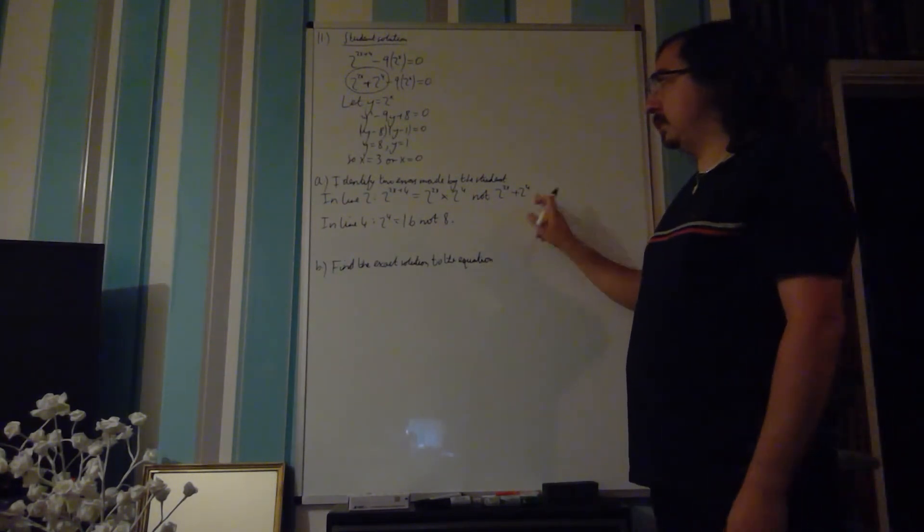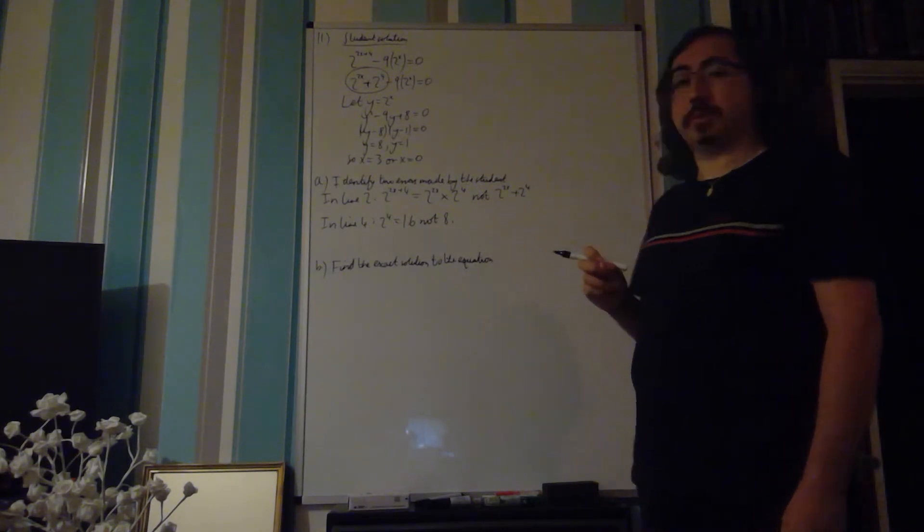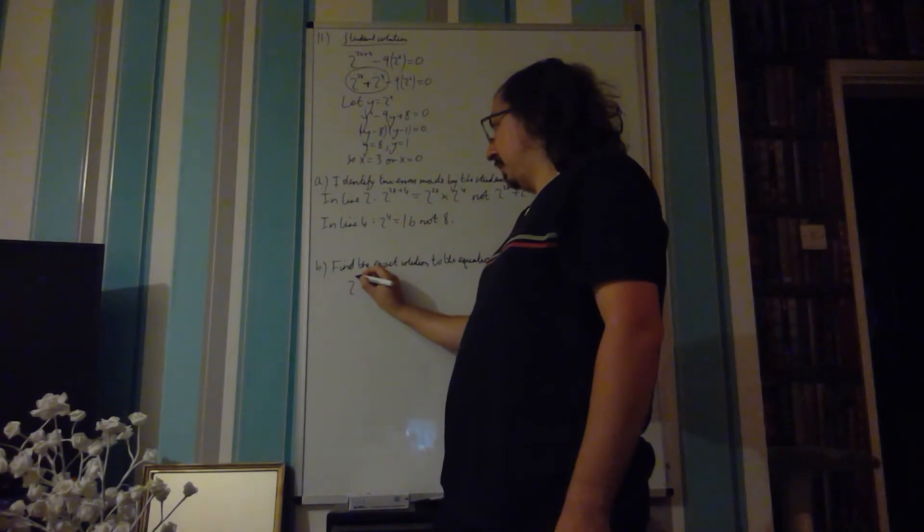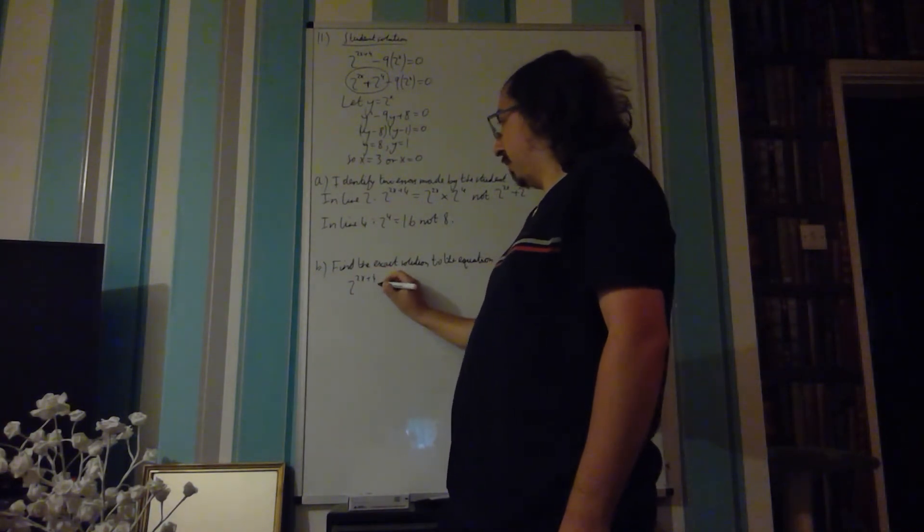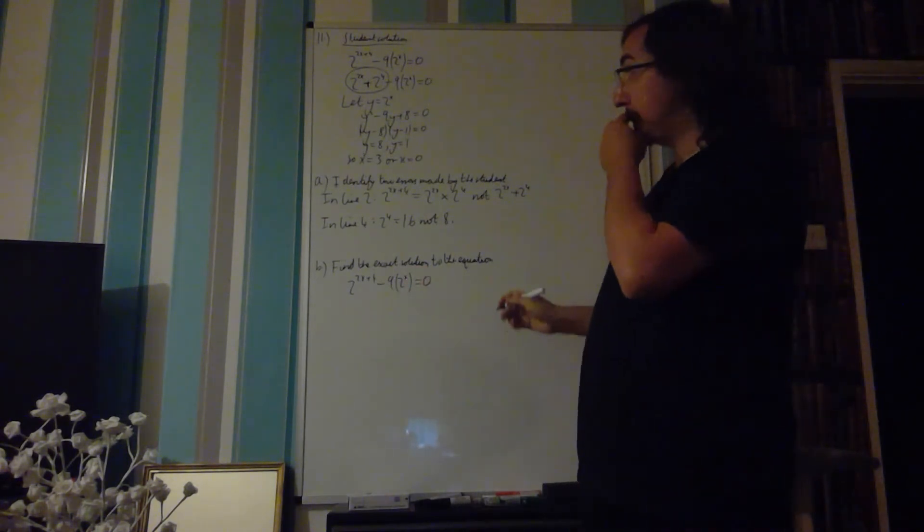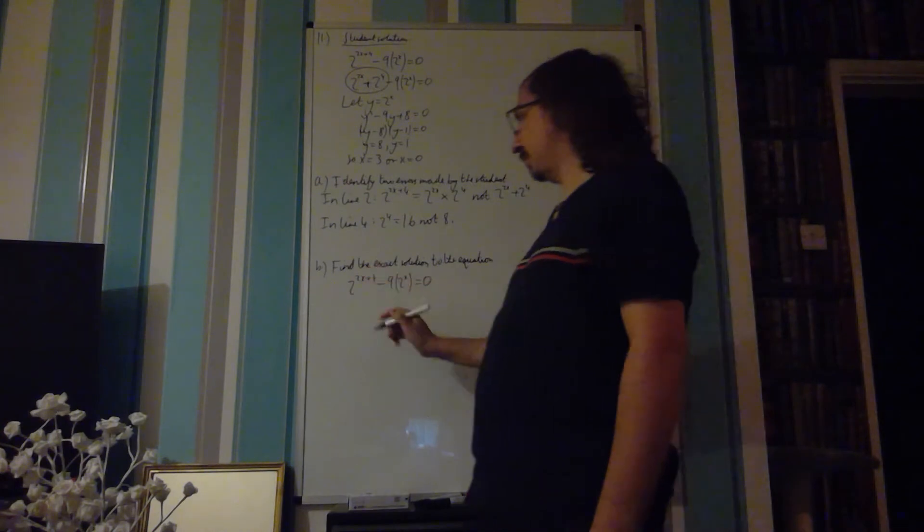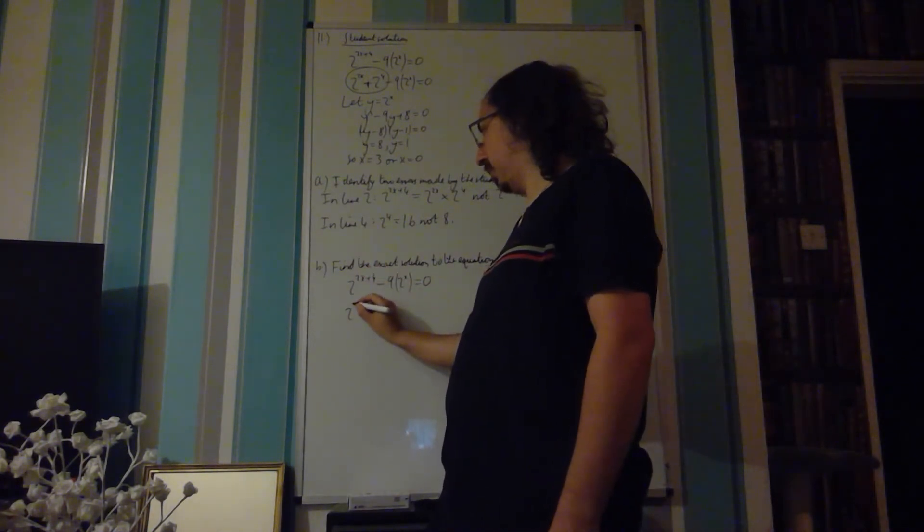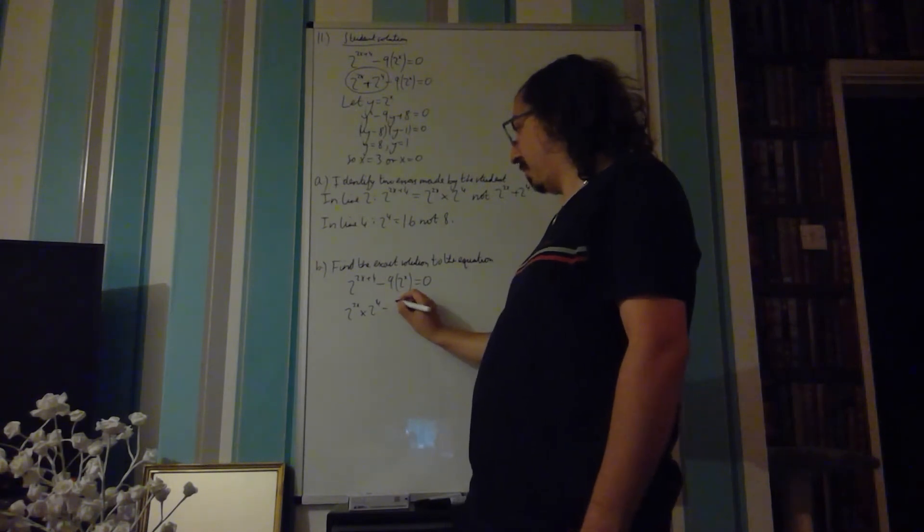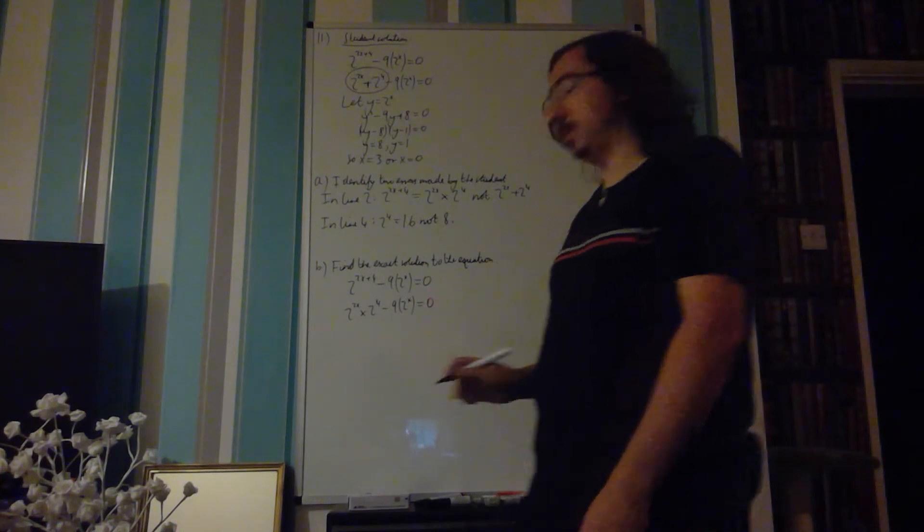So, with these two corrections in place, then we should be able to solve this problem. So going back, we can start with the top line. So 2 to the 2x plus 4 minus 9 times 2 to the x is equal to 0. So if we correctly split this up into the two parts, we've got 2 to the 2x times 2 to the power of 4 minus 9, 2 to the x is equal to 0.